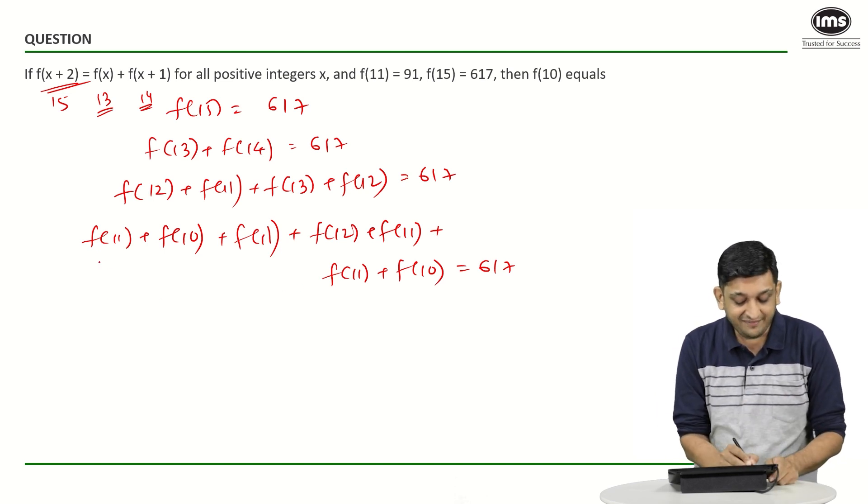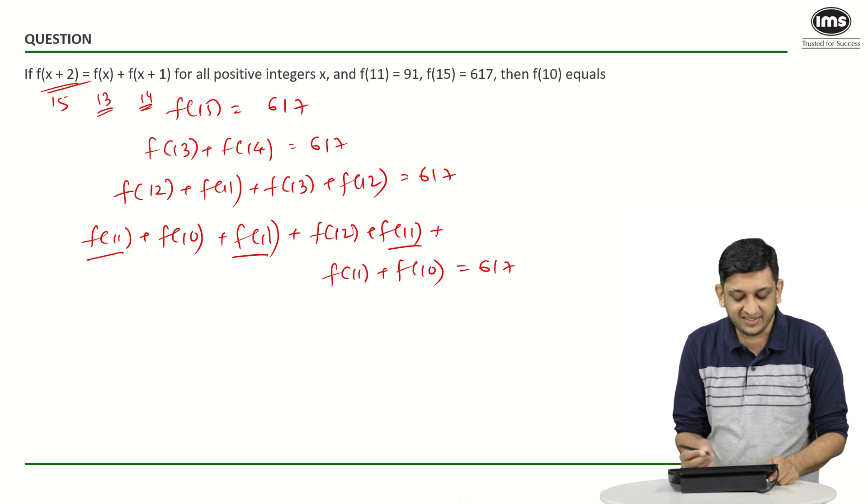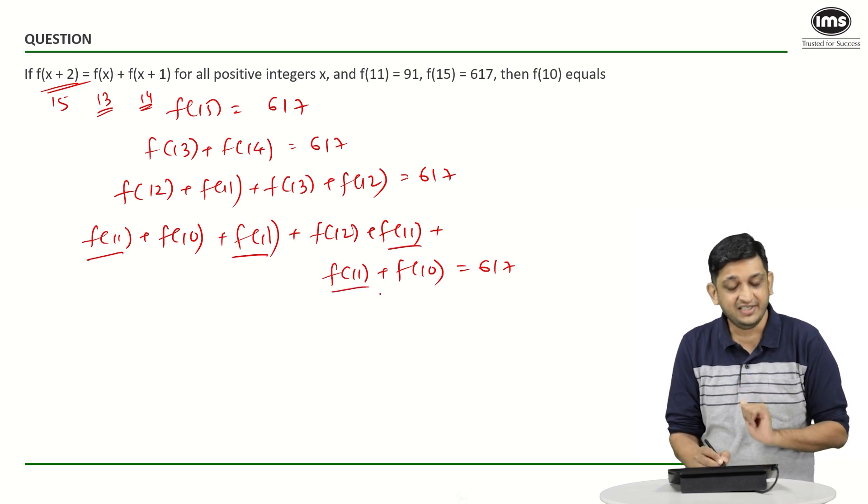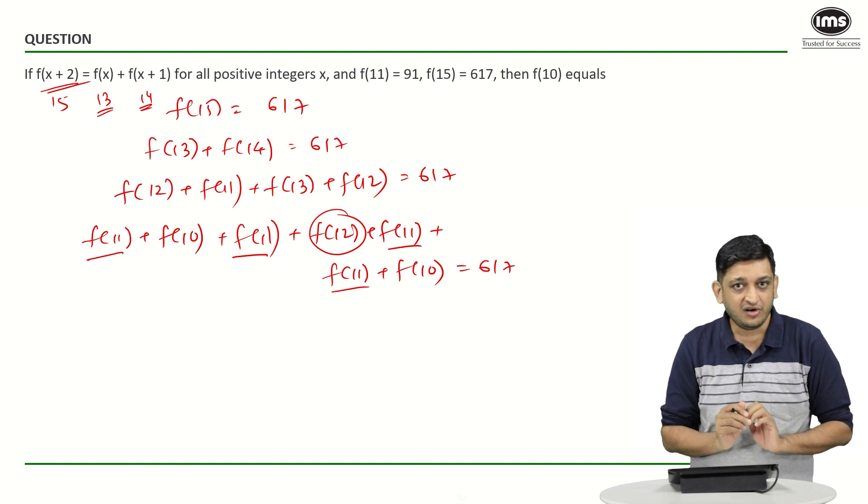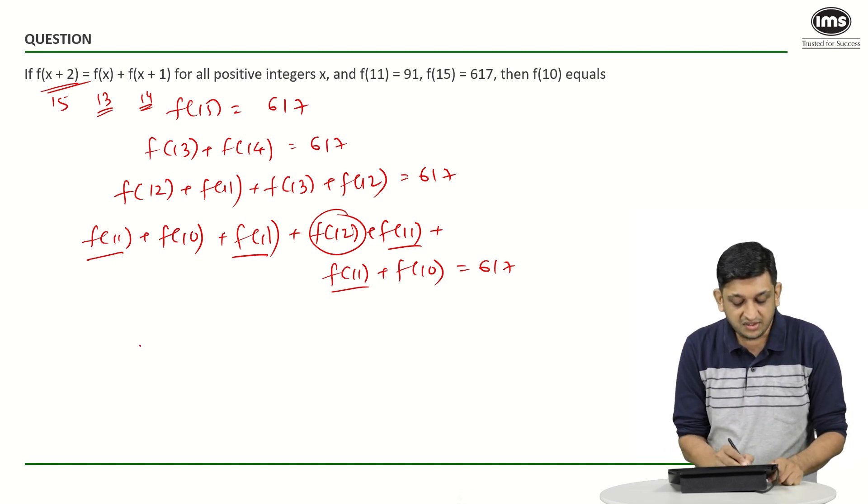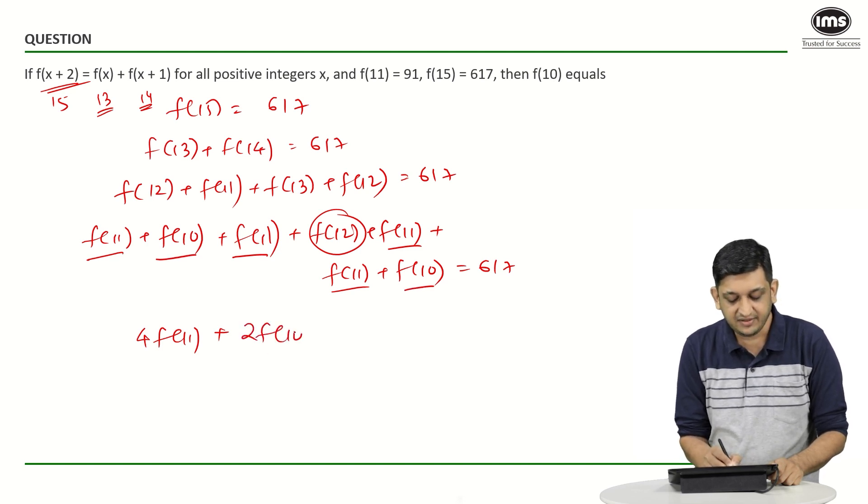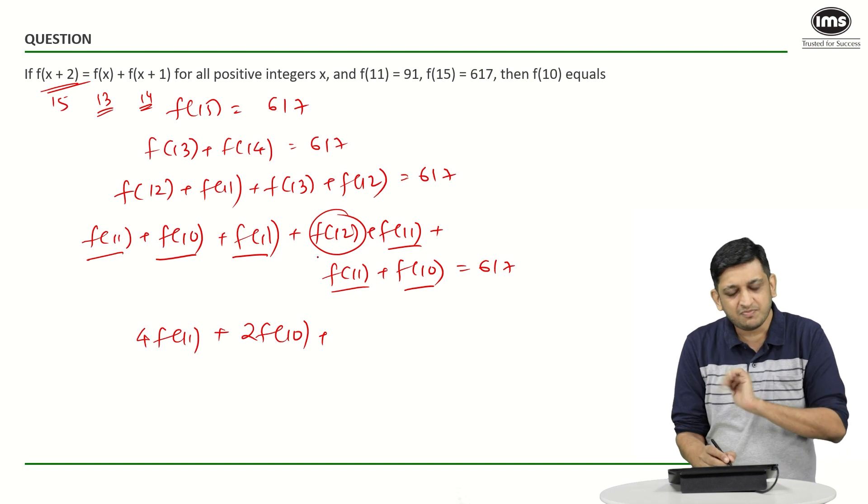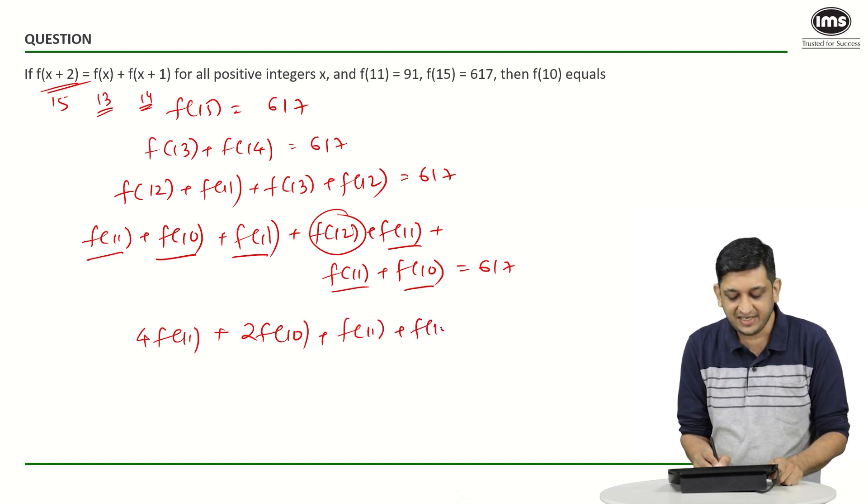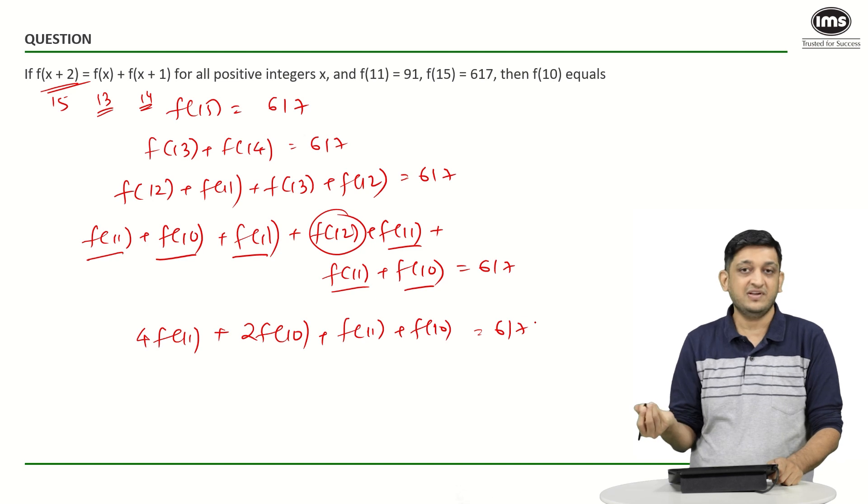In this case, what we have here is we have f(11), f(11), f(11), f(11) that is present here. We also have this f(12) that can be resolved again. So, 1, 2, 3, 4 times f(11) plus 1 and 2 times f(10) plus this f(12) we will split again, we will write this as f(11) + f(10) equals 617.